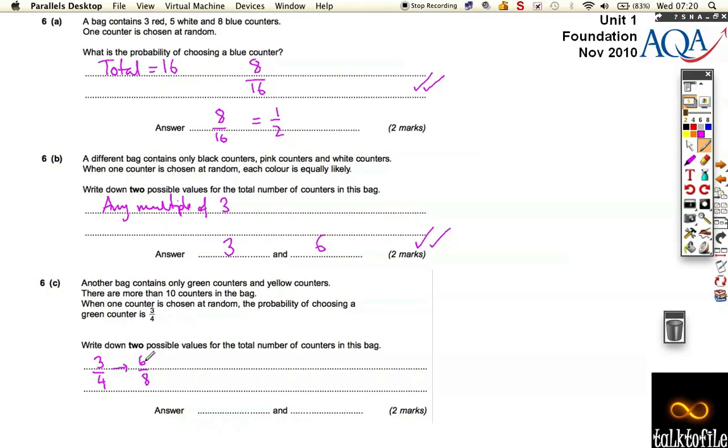There could be six green counters, and that means there's going to be two yellow counters. But that means a total of eight, so it's still not big enough. It says there's more than ten counters in the bag.